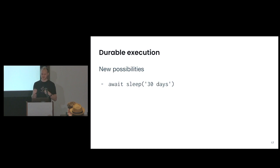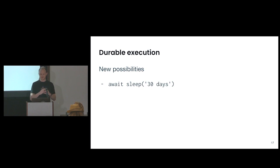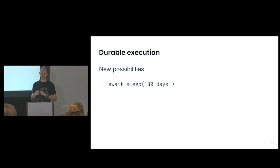I'm not going to take up resources during those 30 days — there's not going to be a thread waiting. The system will automatically see that nothing is happening with this function, unload it just like it would if the process crashed, and use the same recovery system so that in 30 days a timer goes off in a database and the function continues from that line.